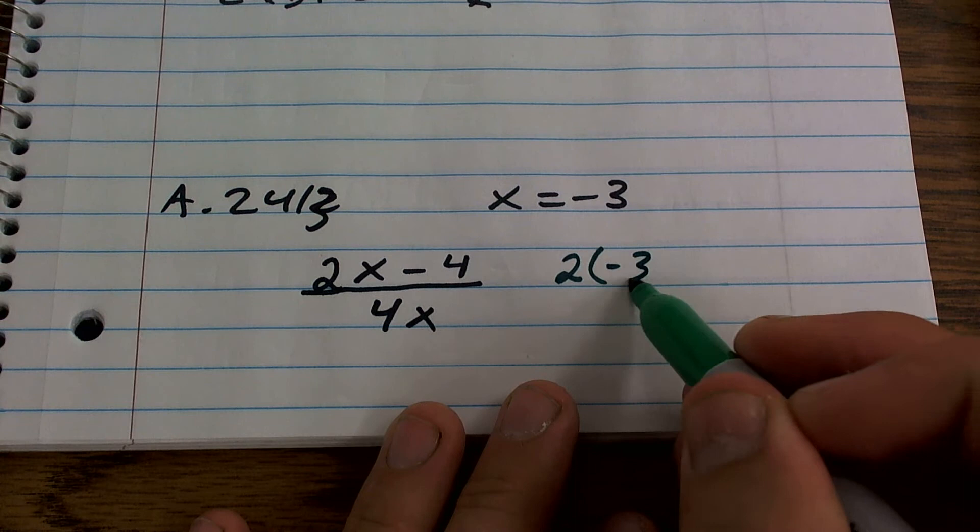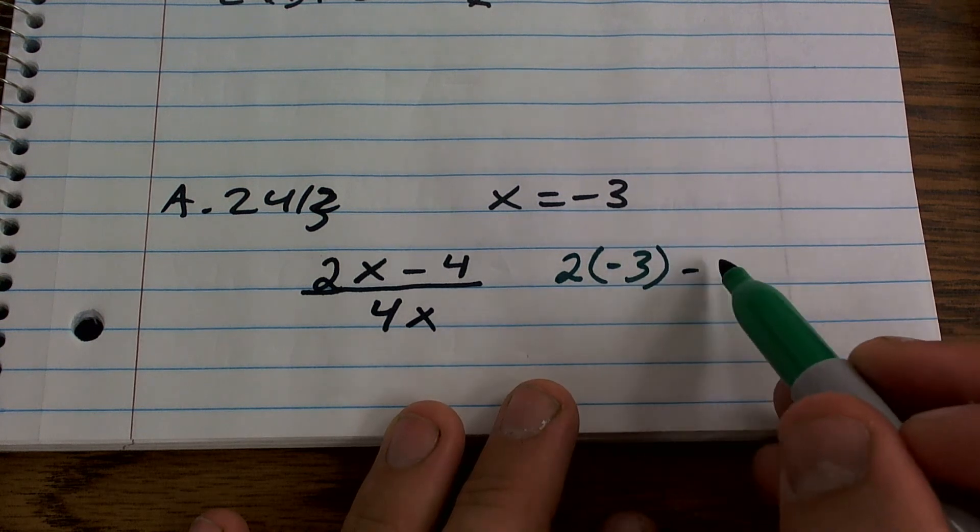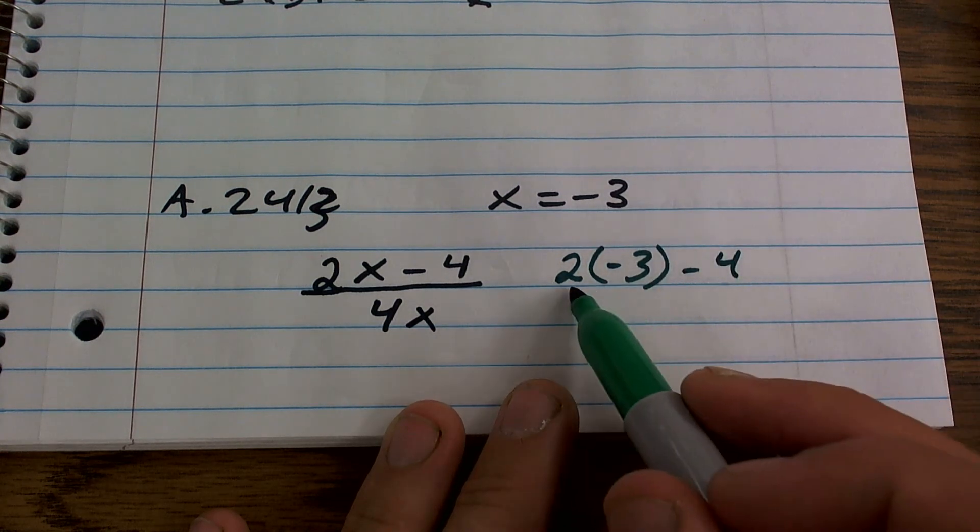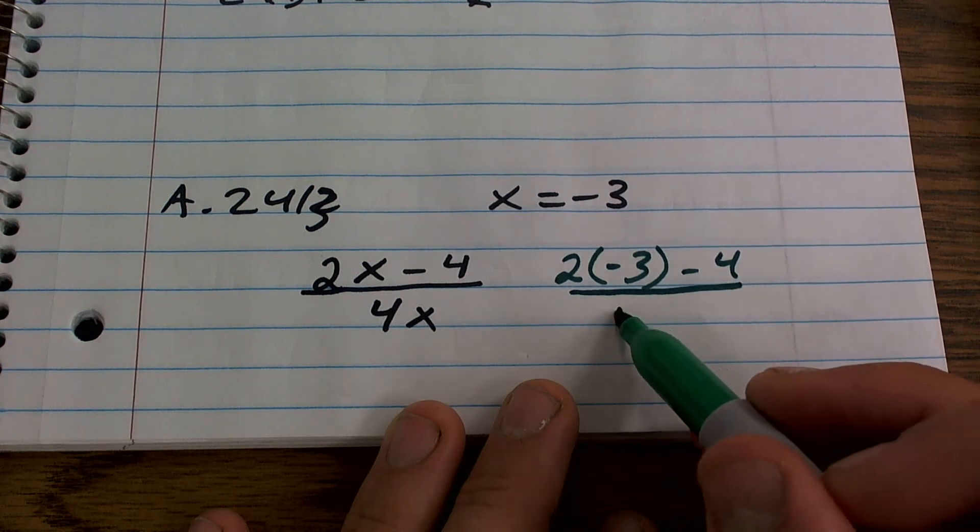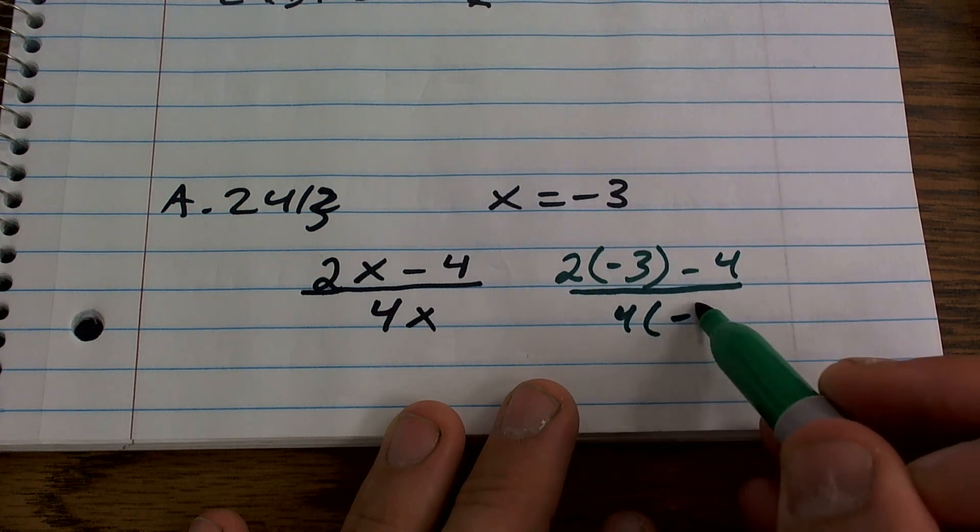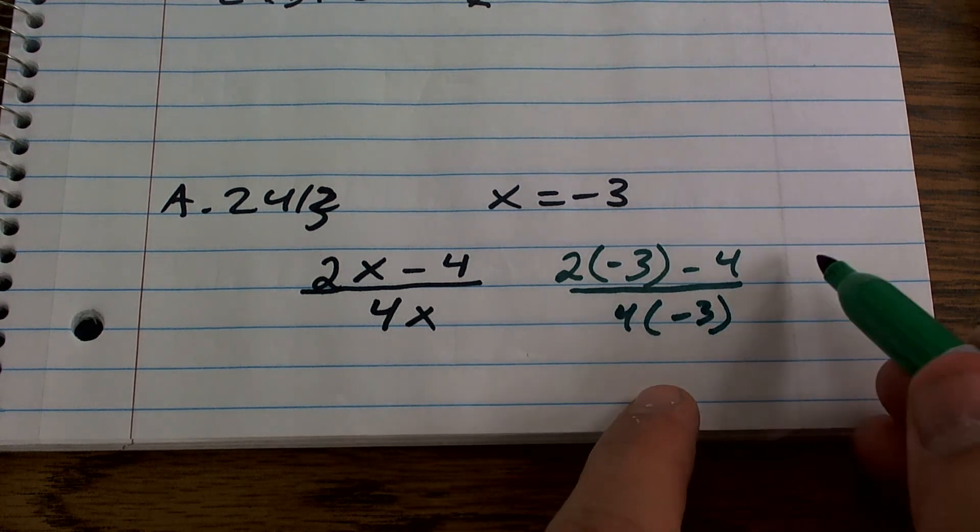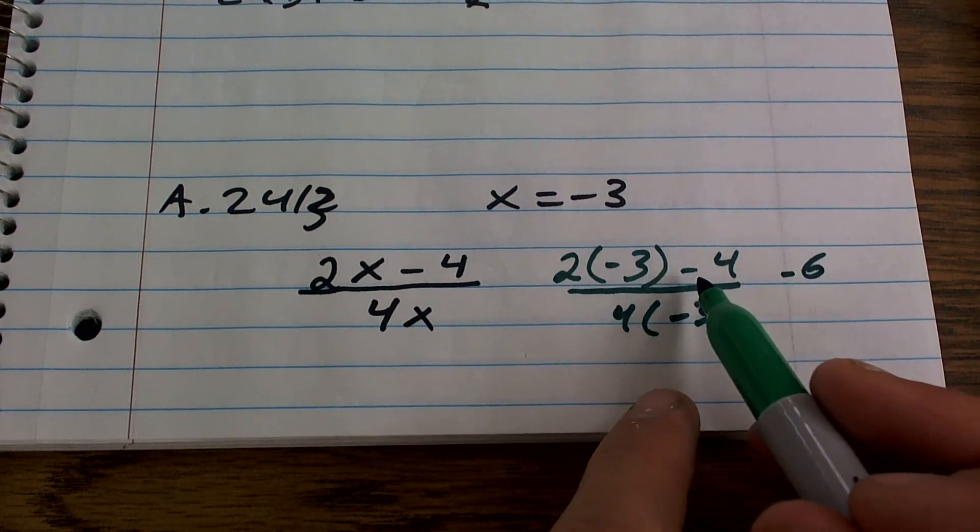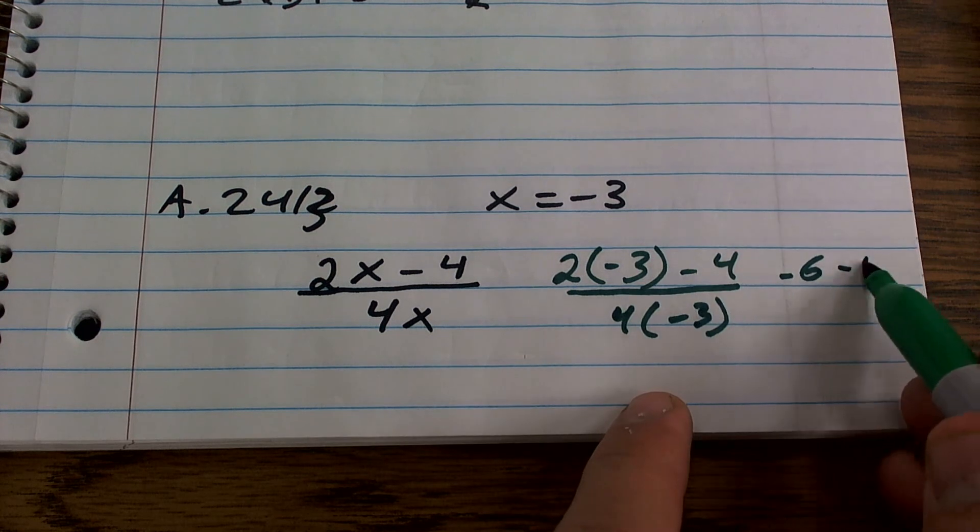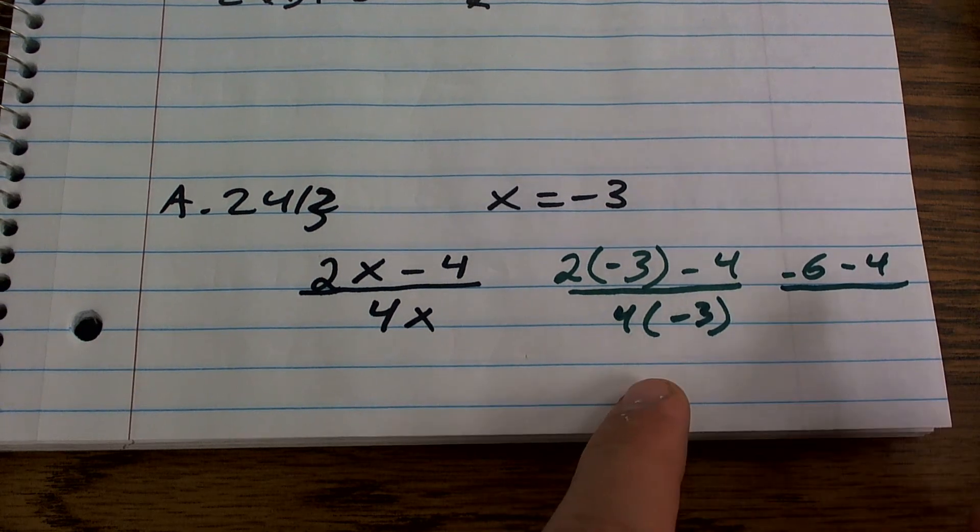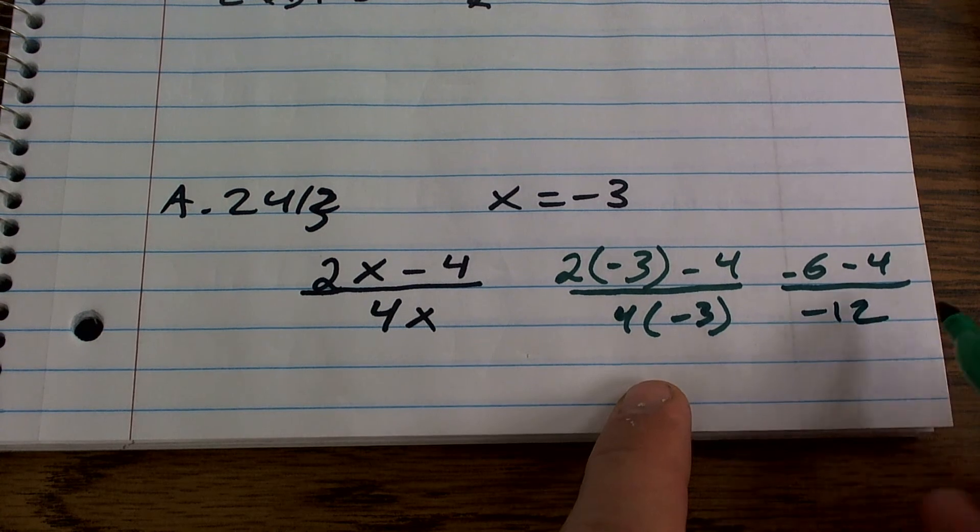When I replace a variable, I always like to put it in parentheses. I don't like to do the math in my head. I just want to put it in parentheses to make sure I get everything right. So now, 2 times negative 3 is negative 6, minus 4, all over 4 times negative 3, which is negative 12.